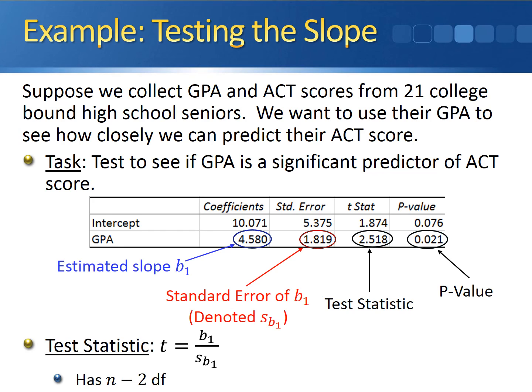When performing inference on the slope, our test statistic is going to follow a t-distribution, and it's calculated by taking the estimated slope and dividing by the standard error of the slope. This t-statistic has n minus 2 degrees of freedom.